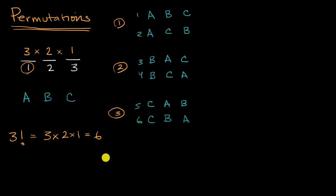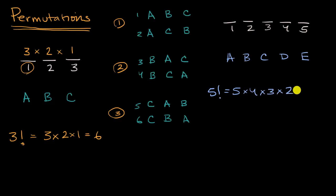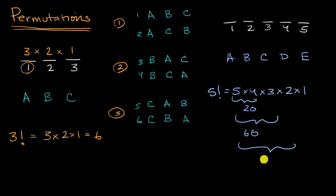To appreciate the power of this, let's extend our example. Let's say we have five seats and five people: A, B, C, D, and E. How many different ways can these five people sit in these five seats? Well, that's going to be five factorial, which equals five times four times three times two times one. Five times four is 20, times three is 60, times two is 120, and then times one is 120.